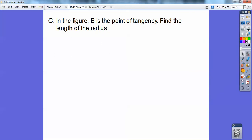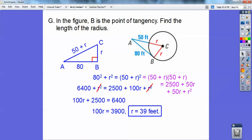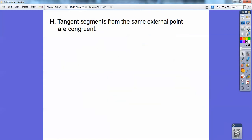So in the figure, B is the point of tangency, then find the lengths of the radius. Now do you see that right angle right there? The only other piece right there is AC. What is AC? A common mistake is people want to say 50R. It's 50 plus R. So go ahead and use the Pythagorean theorem. And then you get 2,500 plus 100R plus R squared equals 6,400. And you might be wondering, where did that come from? That came from foiling out 50 plus R times 50 plus R. And then go ahead and solve, and you get 39 feet.